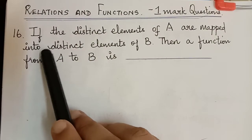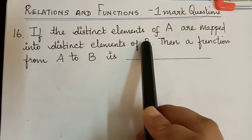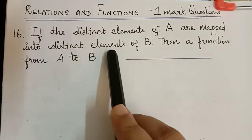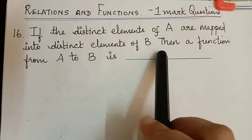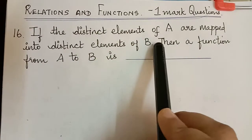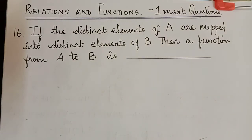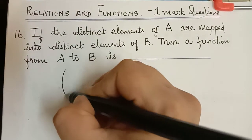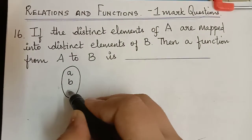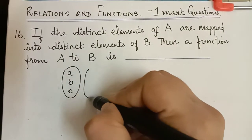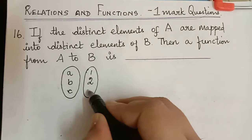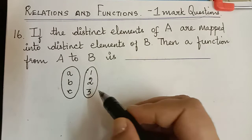If the distinct elements of A are mapped into distinct elements of B, then a function from A to B is what? So now, distinct elements of A — for example, we will have A, B, C and the elements of B which are distinct are 1, 2, 3. So we are considering this example.